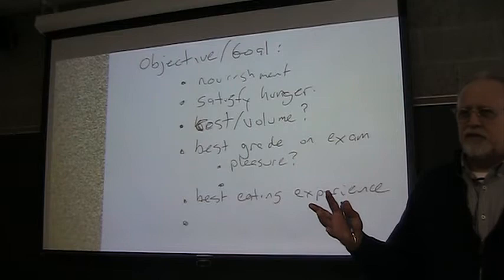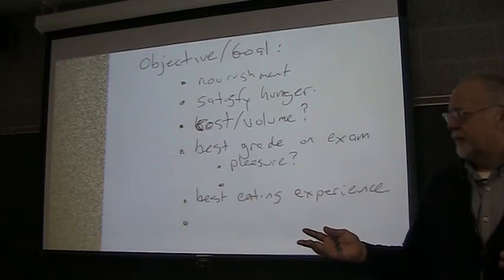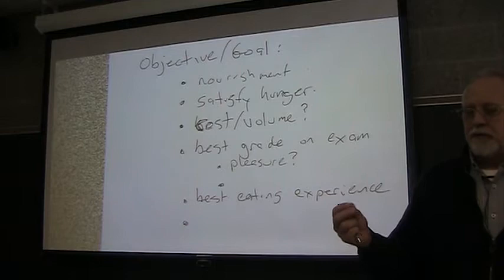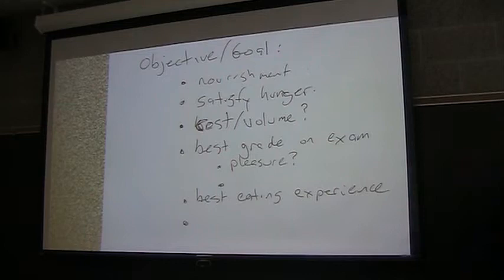There was this engineering company tasked with coming up with a better tomato picking machine that didn't bruise the tomatoes. And what they came up with was a firmer type of tomato. So instead of making the machine, they said, let's go back. The problem is the tomatoes are getting bruised. What can we do to solve that problem? Not just jump to making a machine.